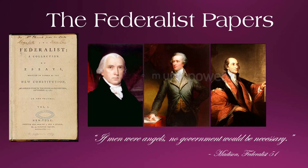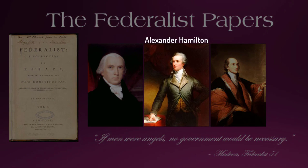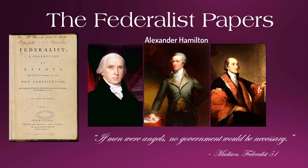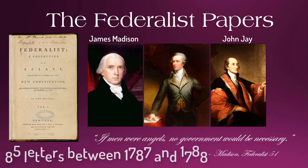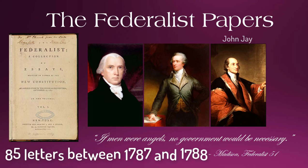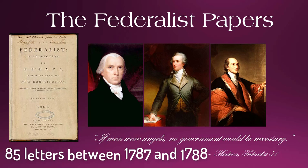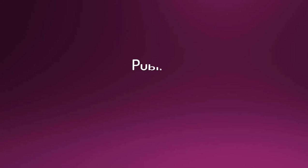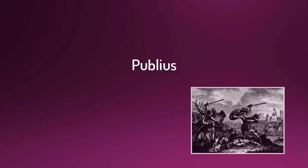To urge the people to ratify the new proposed Constitution, Alexander Hamilton began to write anonymous letters to the people of New York and recruited James Madison and John Jay to assist him on this project. Between 1787 and 1788, 85 of these letters were published in newspapers in New York City, urging New Yorkers to ratify the Constitution. These letters were all anonymously signed with the name Publius, in homage of the original Publius who helped establish the Roman Republic.